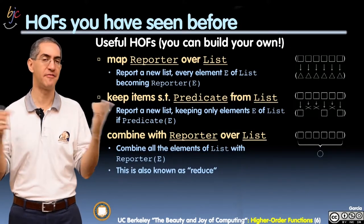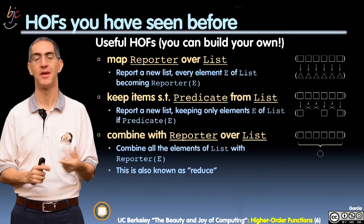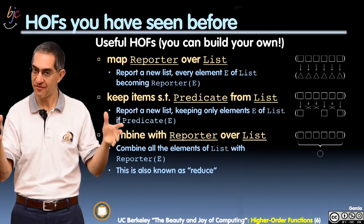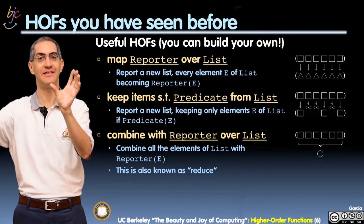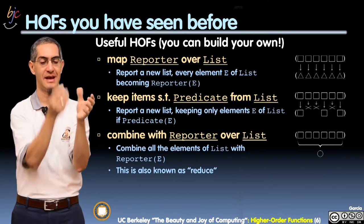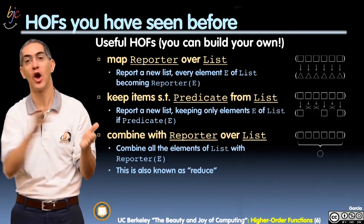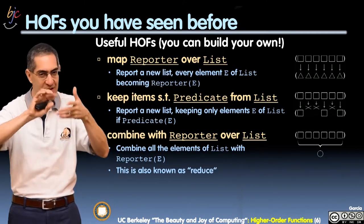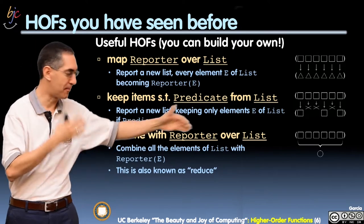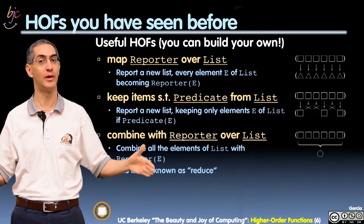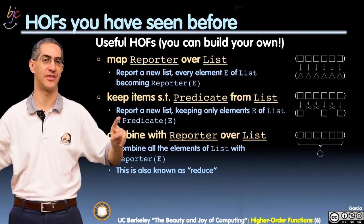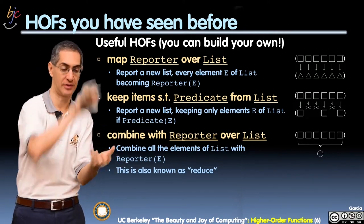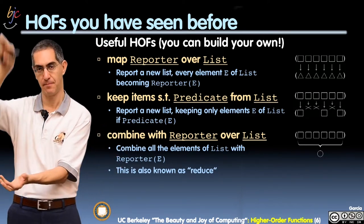Here are higher-order functions you've seen before. MAP is a higher-order function that takes in a function and a list — a function of one argument — and applies that function to every element in the list. So if it has squares, the function changes squares to triangles, and it applies that to every element and returns a new list of equal size. Each resulting element has that function applied to the original element, one-to-one. That's MAP.